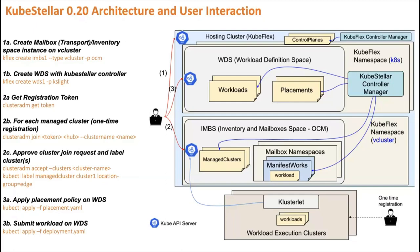The next step is a single command to create a WDS space. This will create a space of type k8s — a vanilla Kubernetes API server — and also install and run the KubeStellar controller pointing to that particular space. There are a couple more steps about registering the workload execution clusters with OCM. After that you're ready to go: you can start applying placement policies, submitting workloads, and everything works as before.